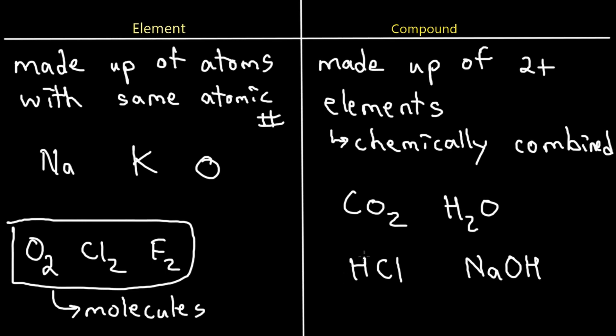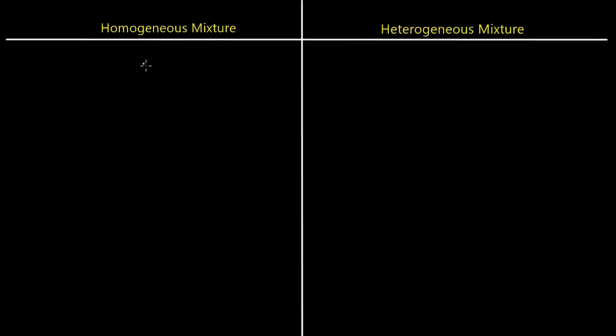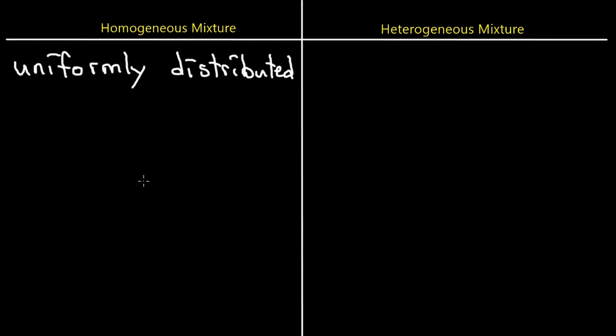Learn the differences between these — they are very crucial to understand because you're going to get very lost when we start talking about actual chemical processes. Next, let's talk about homogeneous and heterogeneous mixtures. A homogeneous mixture is a mixture made up of particles that are uniformly distributed.